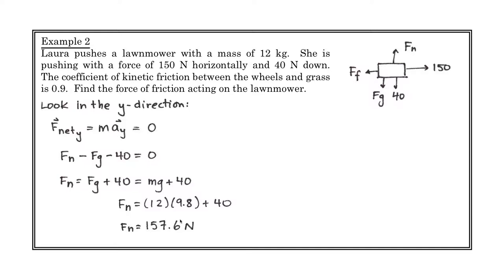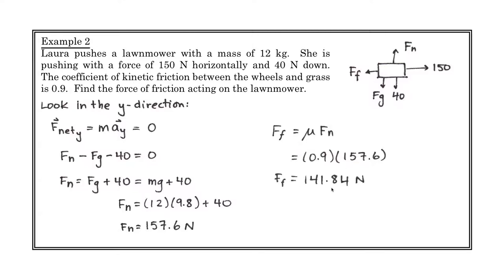Now that we have the normal force, we can find friction. The force of friction equals mu times normal: 0.9 times 157.6, which gives us 141.84 newtons. That is our force of friction.